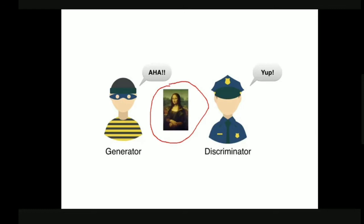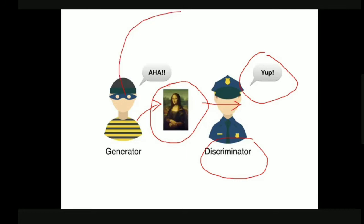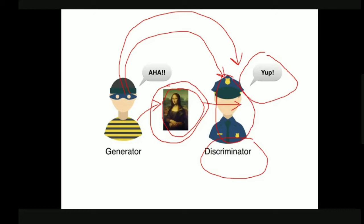Eventually the generator produces an image very similar to the original, and the discriminator says it is not fake — meaning the discriminator has failed. The work of the generator is to fool the discriminator into believing the generated image came from the original dataset. If the discriminator fails to detect that the image was generated, the generator is successful and the discriminator is unsuccessful.